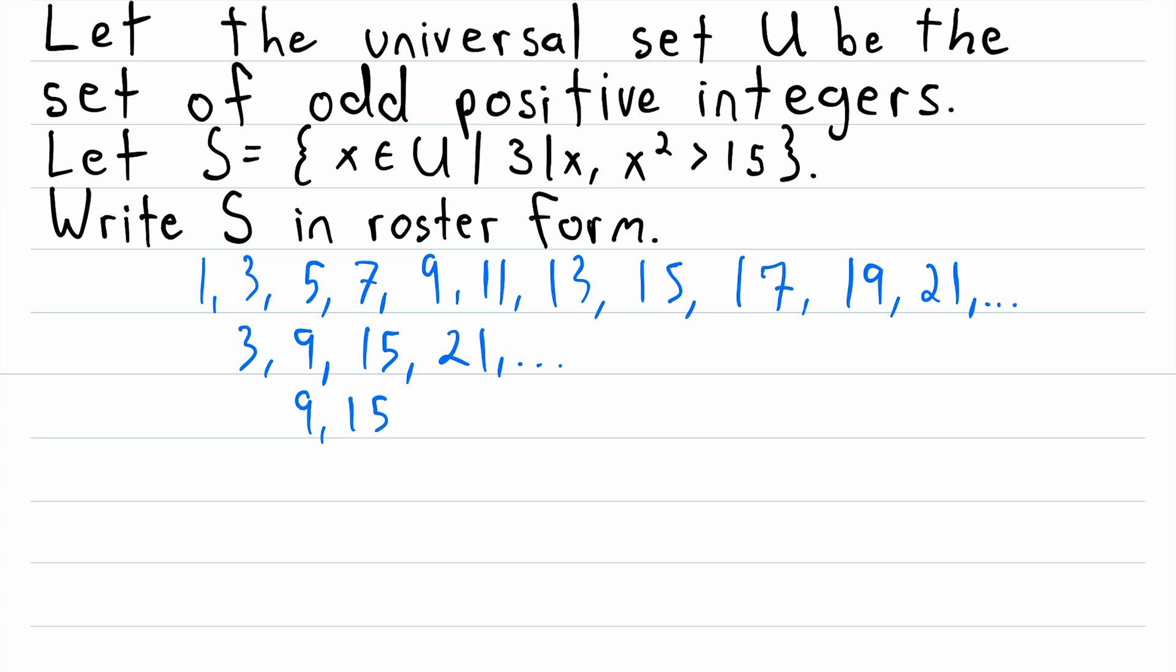So our list is reduced to 9, 15, 21, and so on. The ellipsis, these three dots here, indicates that a pattern continues. Do you see what the pattern is with these three numbers? The pattern is that to get from 9 to 15, we just have to add 6. To get from 15 to 21, we just have to add 6. And this pattern continues.